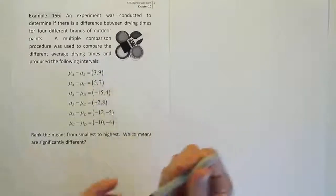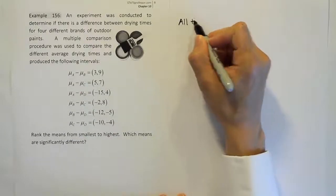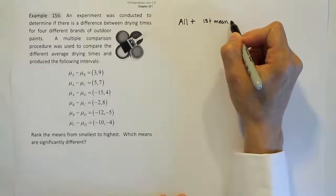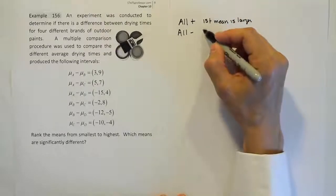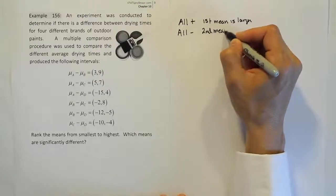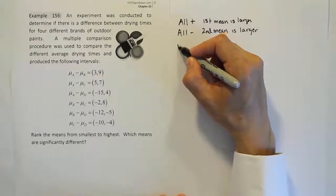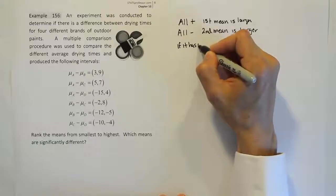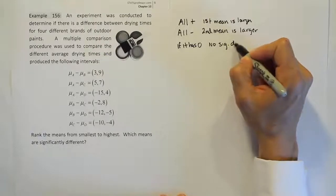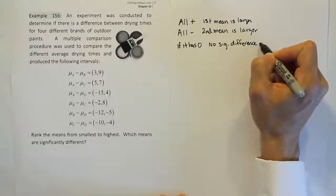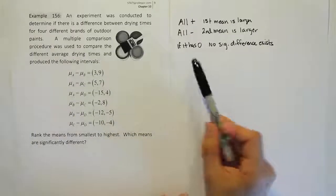If you remember the interpretation: if the interval is all positive, then the first mean is larger. If it's all negative, the second mean is larger. And finally, if zero is contained in the interval, then no significant difference exists. Those are the three things we want to remember, and they'll help us do all the interpretation we need.